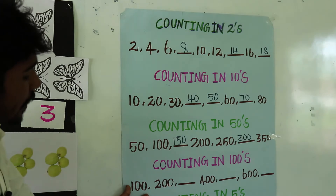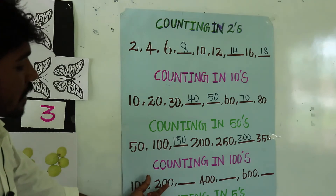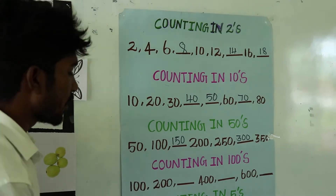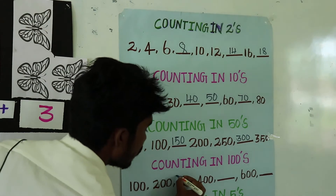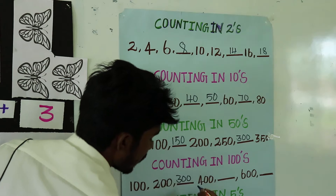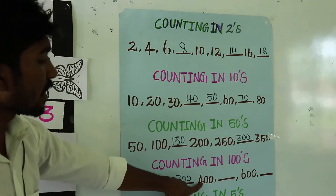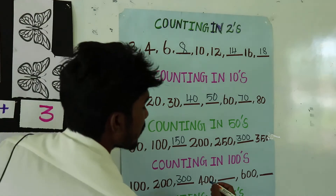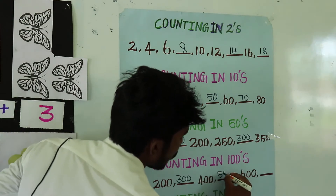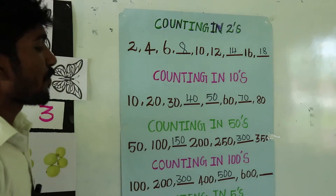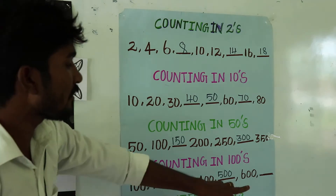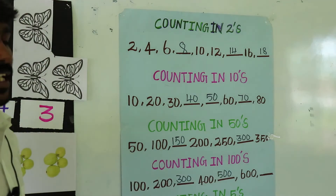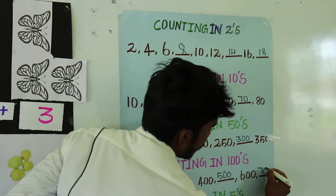Then next one, counting in 100s: 100 plus 100 is equal to 200, 200 plus 100 is equal to 300, 300 plus 100 is equal to 400, 400 plus 100 is equal to 500, 500 plus 100 is equal to 600, 600 plus 100 is equal to 700.